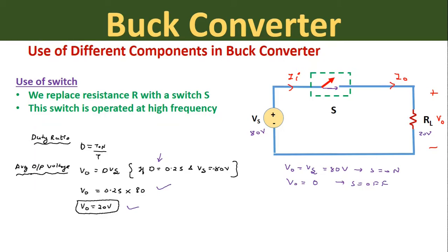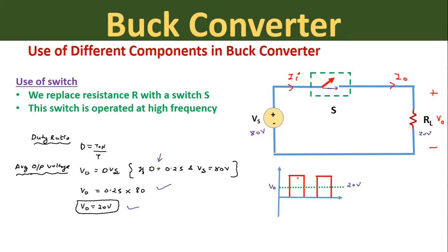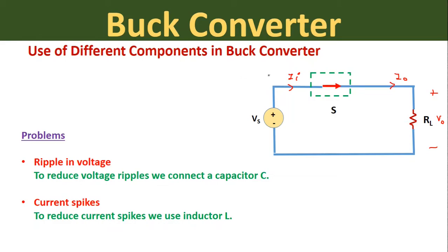If we draw the waveform, the average output voltage is 20 volts and the peak voltage is 80 volts. When the switch is in the ON condition, the maximum output voltage is 80 volts, but the average output voltage is 20 volts. So we are getting voltage spikes when using this switch in place of resistance R. Another problem is that when the switch goes into the ON condition, the input source pushes current at very high speed, producing current spikes at the output. So this circuit has two problems: ripple in output voltage and current spikes at the output.